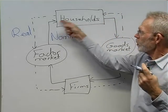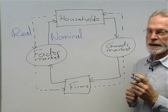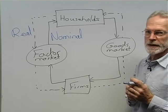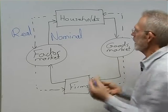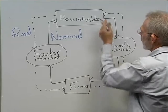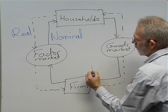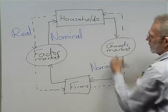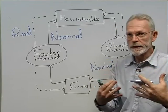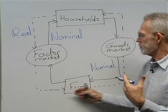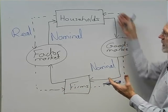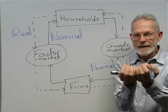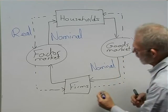Households use the income that they received and they spend it on the market for goods and services. Spending in the form of money — again we have a nominal flow. So there's a nominal flow flowing from households to firms. In return, firms provide goods and services to households. Goods and services — again something you can touch, physical — so we call it a real flow.